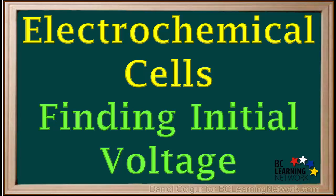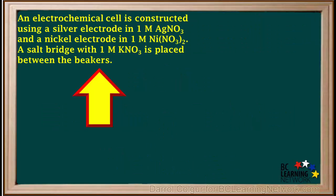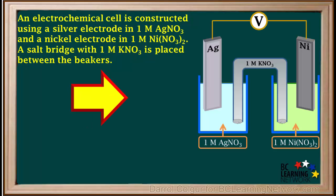We're given the materials used to construct an electrochemical cell and asked various questions about it, including the initial cell voltage. An electrochemical cell is constructed using a silver electrode in 1 molar silver nitrate and a nickel electrode in 1 molar nickel(II) nitrate. A salt bridge with 1 molar KNO₃ is placed between the beakers. We'll add a diagram to represent the cell.